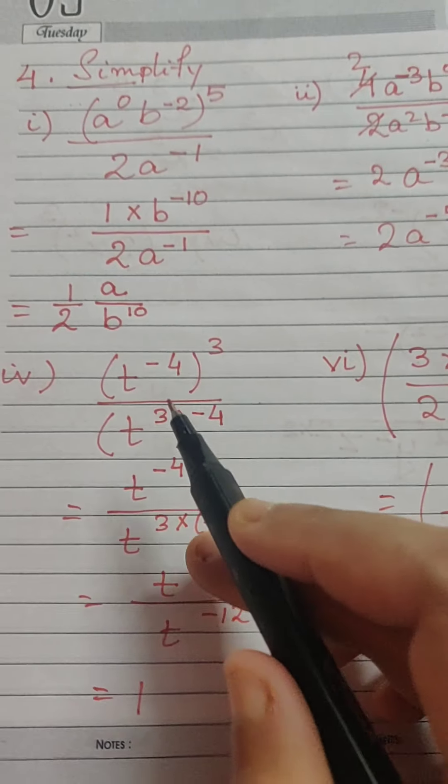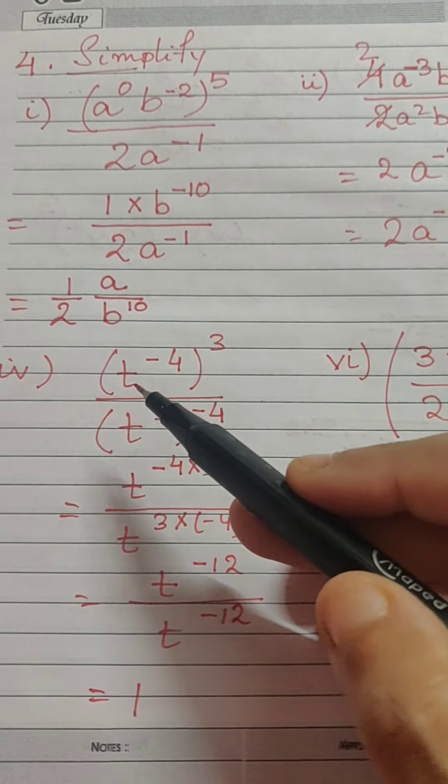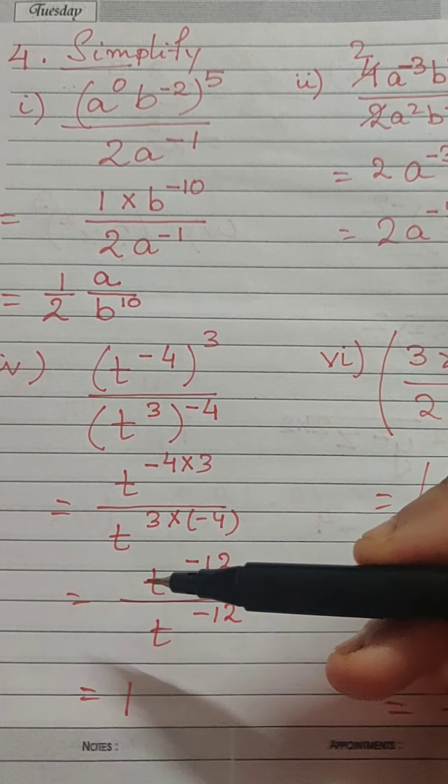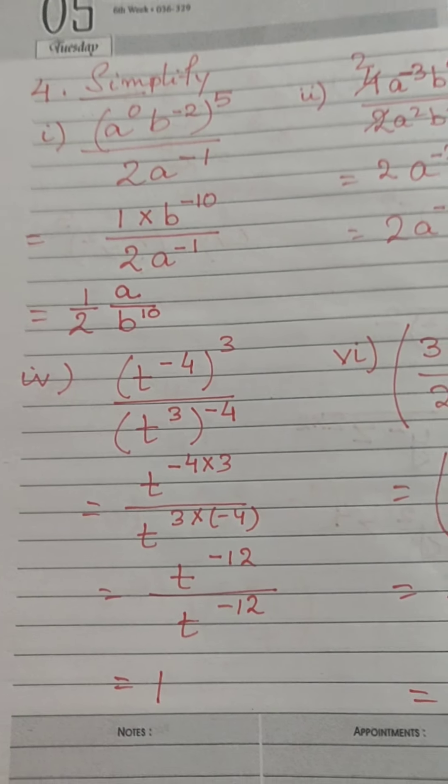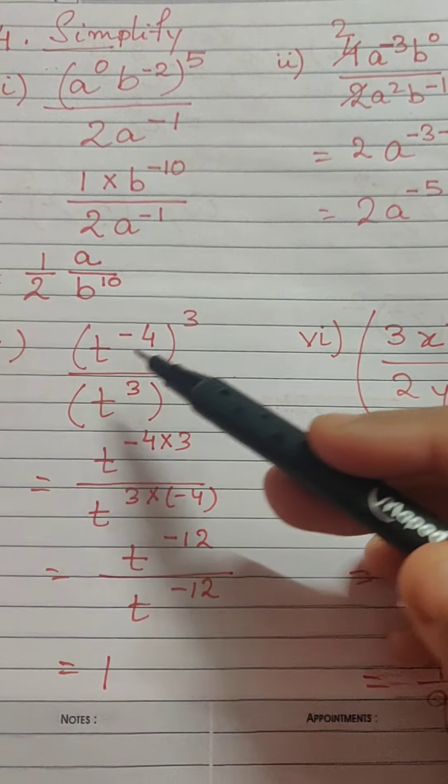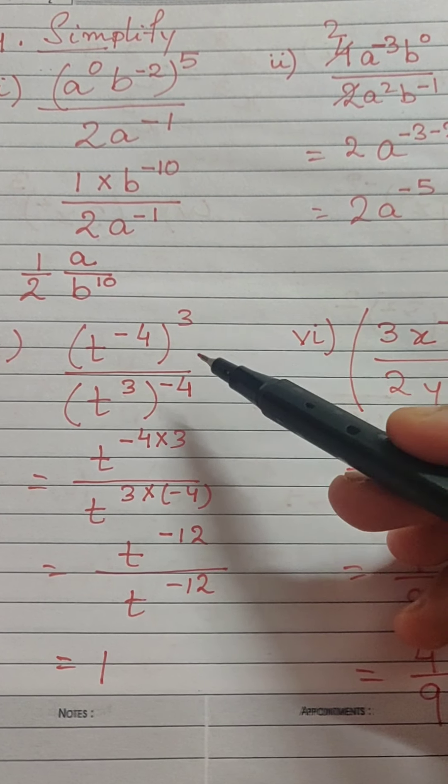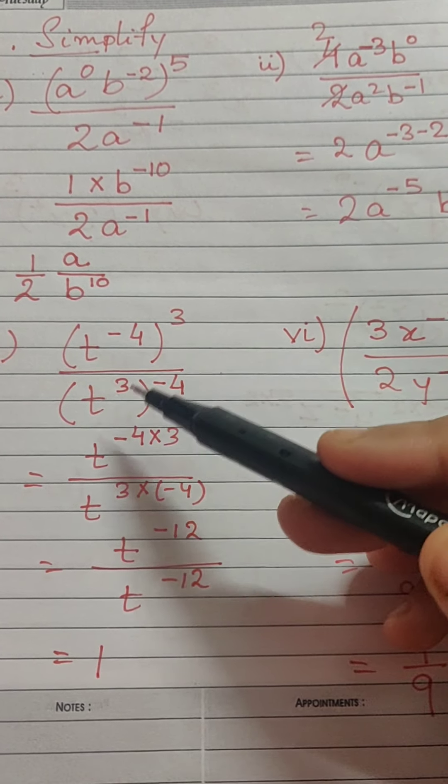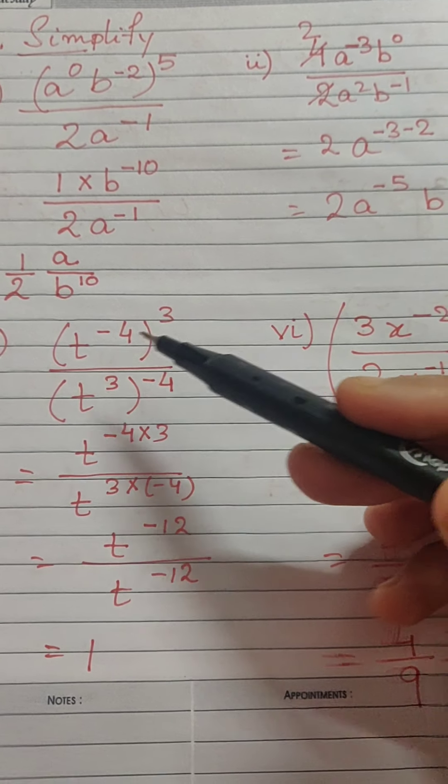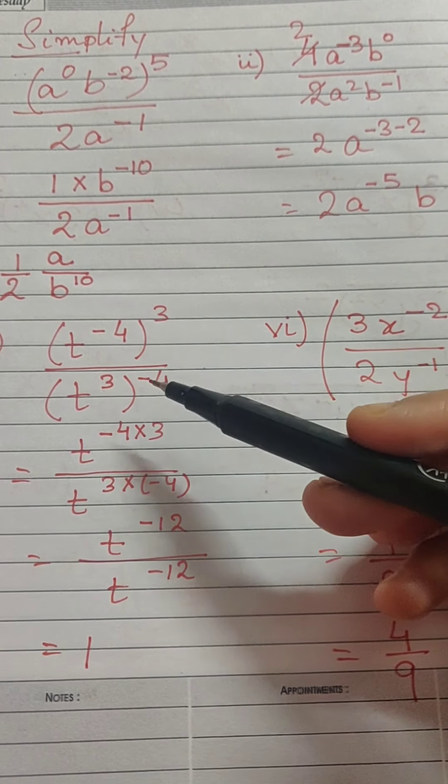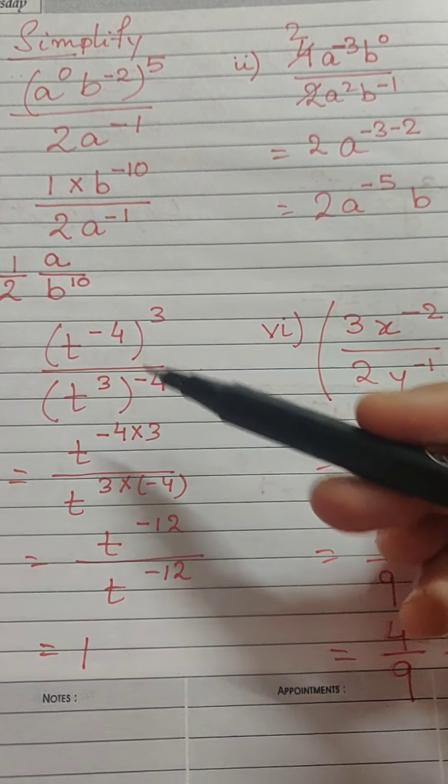Then we come to question number 4 which is pretty simple sum but I have still shown you how the working works. 2 to the power minus 4 whole raised to the power 3. 2 to the power 3 whole raised to the power minus 4. Notice that here both the exponents are same. It is just that their placement is different.